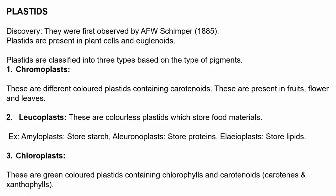The next is chloroplast. These are green-colored plastids containing chlorophyll that help in the process of photosynthesis. They contain chlorophylls and carotenoids, especially carotenes and xanthophylls. As mentioned earlier, chloroplast is also a double-membranous cell organelle.